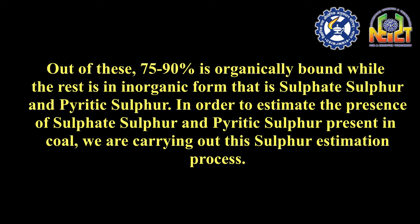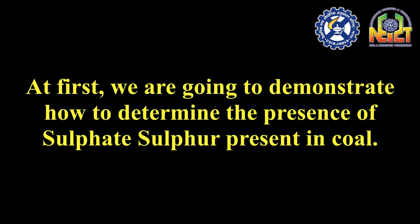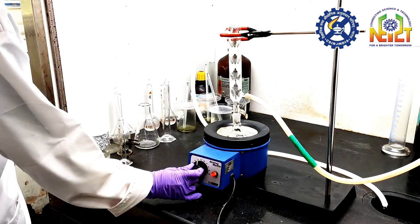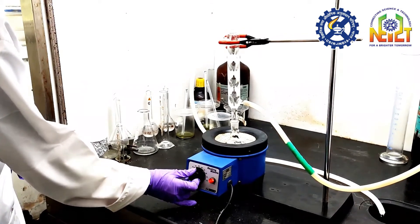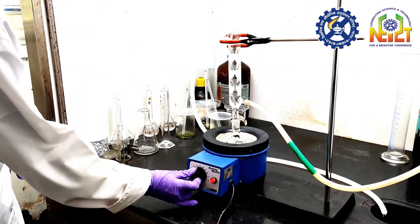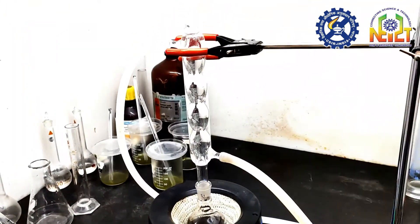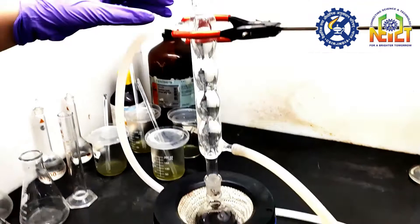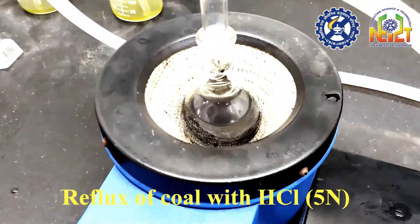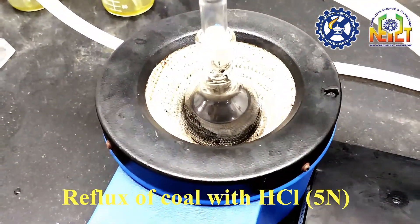In order to estimate the presence of sulfate and pyritic sulfur present in coal, we are carrying out the sulfur estimation process. First, we are going to demonstrate how to determine the presence of sulfate sulfur present in coal. We have to reflux 5 grams of coal with 50 milliliters of 5 normal hydrochloric acid. The reflux is carried out in a round bottom flask of 100 milliliters for 30 minutes.